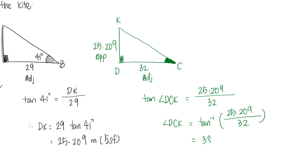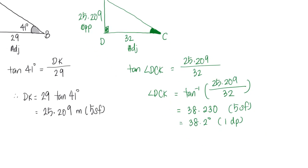This gives me a value of 38.2 degrees to one decimal place as the final answer. Therefore, the angle of elevation of the kite from C equals 38.2 degrees.